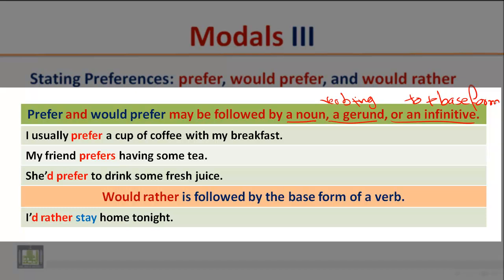Examples: 'I usually prefer a cup of coffee with my breakfast' — here the word 'prefer' is followed by a noun. 'My friend prefers having some tea' — in this example the verb 'prefer' is followed by a gerund. 'She'd prefer to drink some fresh juice' — in this example the word 'prefer' is followed by an infinitive.